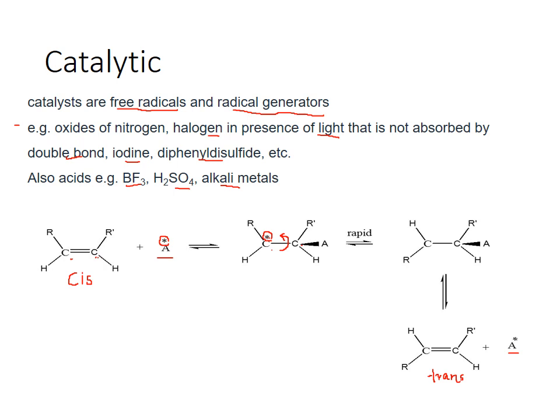Here you can see a carbon-carbon double bond system in the cis form treated with a free radical catalyst. The catalyst reacts with the double bond to form a carbon-A bond, and a free radical is formed at one carbon due to breakage of the pi bond. The free electron then combines with the electron on the catalyst to form a bond. The carbon-carbon single bond can now undergo rotation, changing the relative positions, and ultimately you get the trans isomer, with the catalyst being released. By this method you can convert a cis form to a trans form.